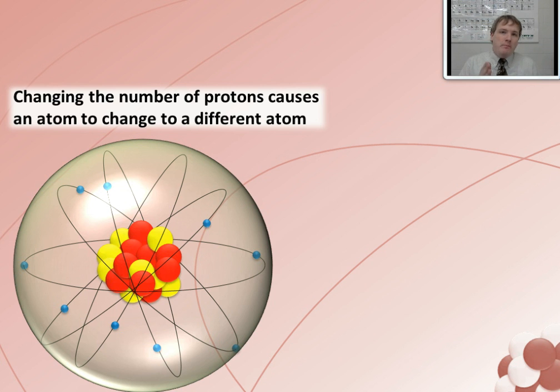That's how important the protons are. If you change their number, you change the atom to an entirely different atom. Now, why is it that we don't just make a whole bunch of atoms of the elements that we want? Like, why can't we just add a bunch of protons to tin, which is an element that's pretty common on the Earth, and make it into gold, which is something that's extremely valuable? Well, the reason we don't do that is because it's very difficult to change the number of protons in the nucleus. It's not something that's easy for us to do.